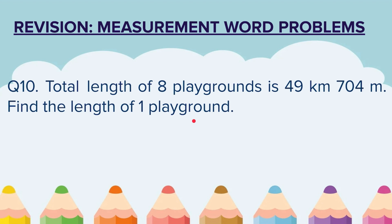Question 10. The total length of 8 playgrounds is 49 kilometers 704 meters. Find the length of 1 playground. The total length of 8 playgrounds is given and you have to find the length of 1 playground.